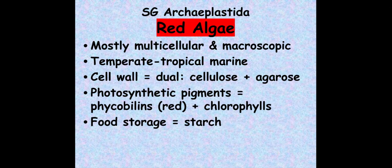For red algae, we're not going to look at specific specimens, but some key points: they're mostly multicellular and macroscopic — visible without a microscope. They grow in temperate to tropical marine or salty ocean environments. Their cell wall is made of cellulose and agarose, slightly different from land plants. They have photosynthetic pigments called phycobilins, which give them their red color, in addition to chlorophylls, and they store food as starch.